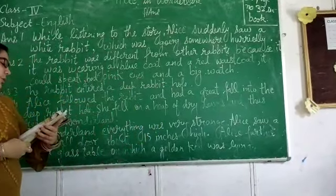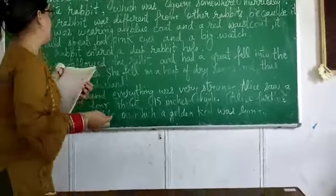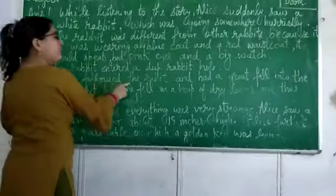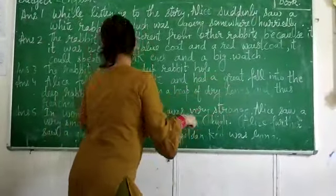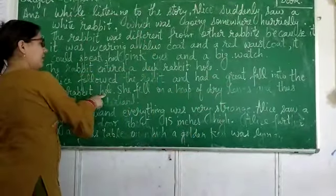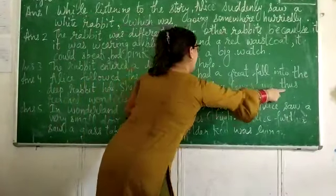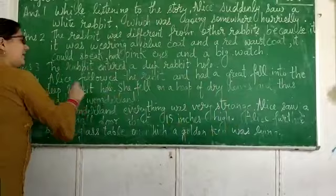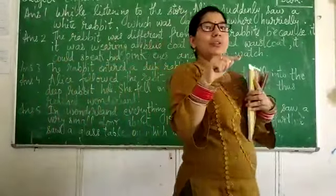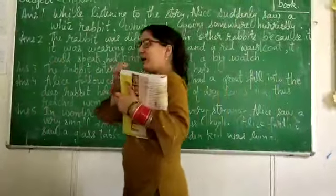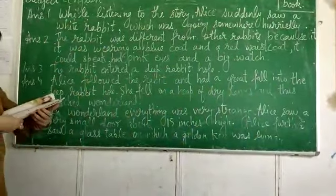Question number 4: how did Alice reach Wonderland? Alice followed the rabbit and had a great fall into the deep rabbit hole. She fell on a heap of dry leaves and thus reached Wonderland. Yes, she continued to follow the rabbit and by following him she reached Wonderland.